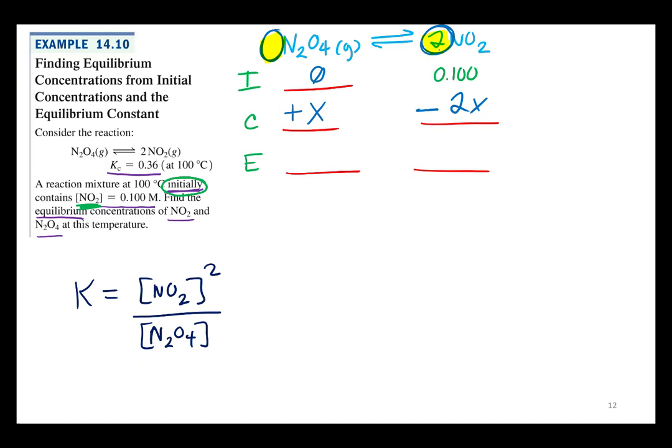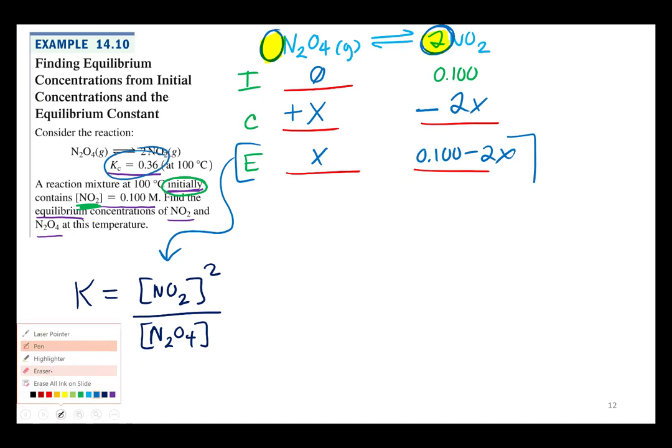Then we're just going to do a little bit of math. What is 0 plus X? X. Yeah, that's just X. What's 0.1 minus 2X? 0.1 minus 2X. So just add those up, subtract them, whatever you need to do. Now I've got my equilibrium line. I'm going to place it in my equilibrium constant, just like I did yesterday. But now, instead of solving for K, I'm going to solve for X, because I know K right there.